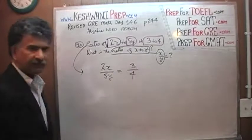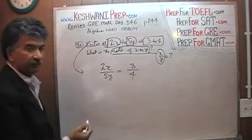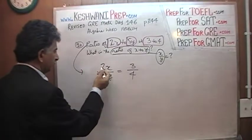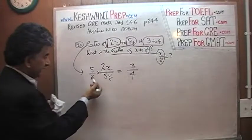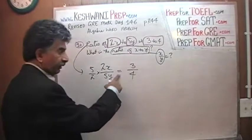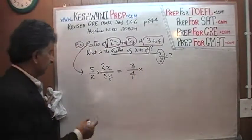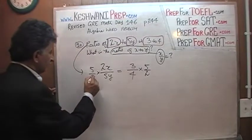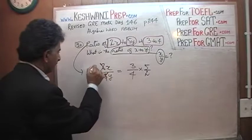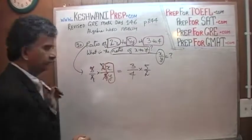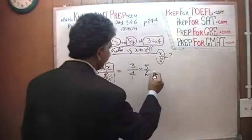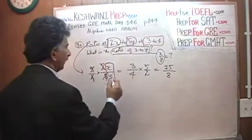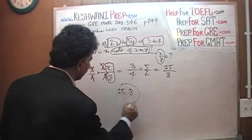We have to get x over y by itself, which means we need to get rid of the 2 on top and the 5 on the bottom. The simplest way is to multiply by the reciprocal — 5 over 2 — on both sides. The 2 cancels with the 2, and the 5 cancels with the 5, leaving x over y. On the right side, 3 times 5 is 15 and 4 times 2 is 8. So the ratio of x to y is 15 to 8.